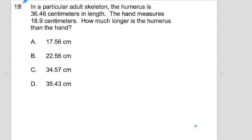First thing I want to do is read the problem. Number 19, I read it over, I look for core ideas and I try and get a mental image of what's happening. In a particular skeleton, the humerus is 36.46 cm in length. The hand measures 18.9 cm. How much longer is the humerus than the hand?